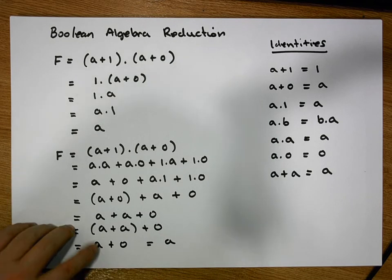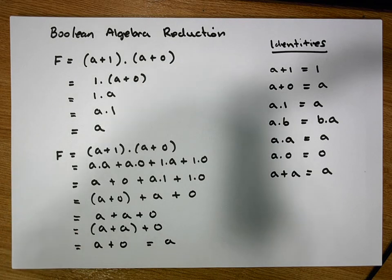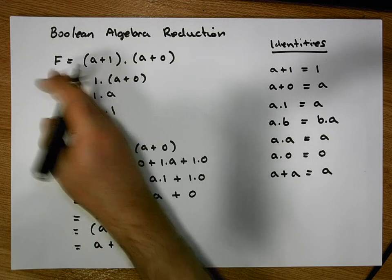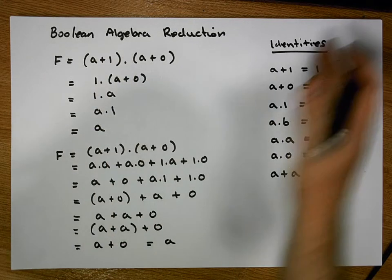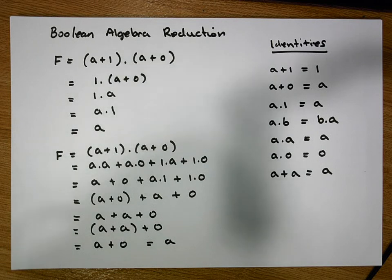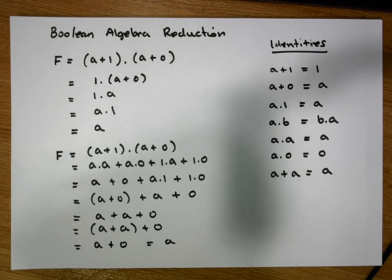So there's another way we could have done this particular reduction. The important thing to keep in mind is that there are many ways to do the reductions, depending on what particular path, which identities you apply, and the order of application. I hope that was helpful. My name is Jonathan Lambert with the Mathematics Development and Support Service at the National College of Ireland. Thank you.